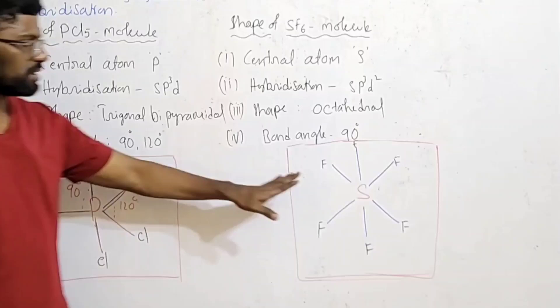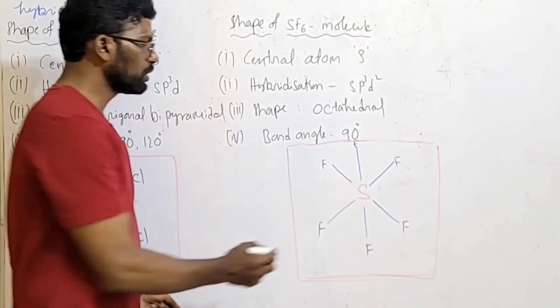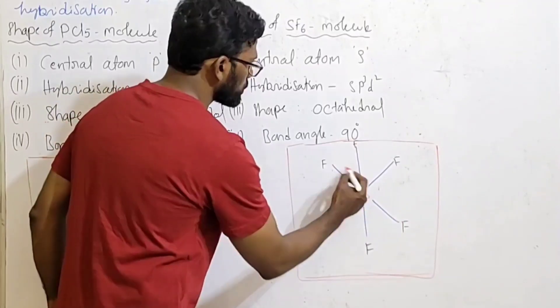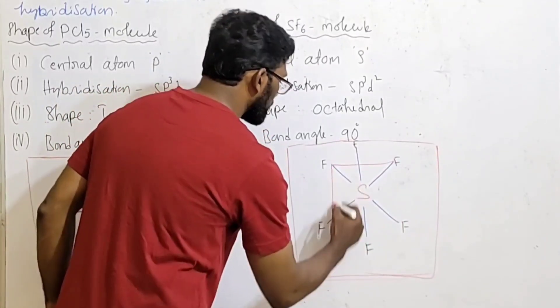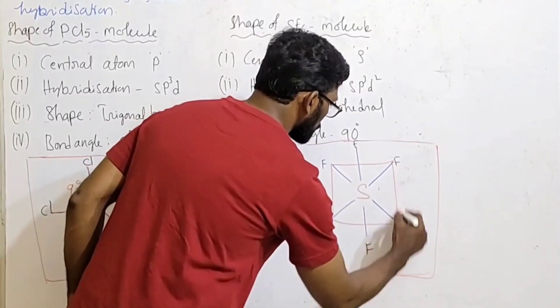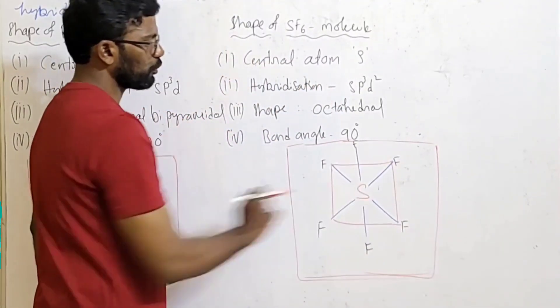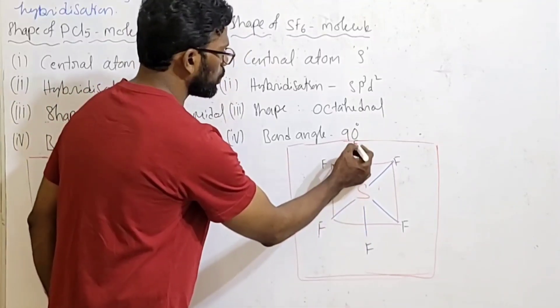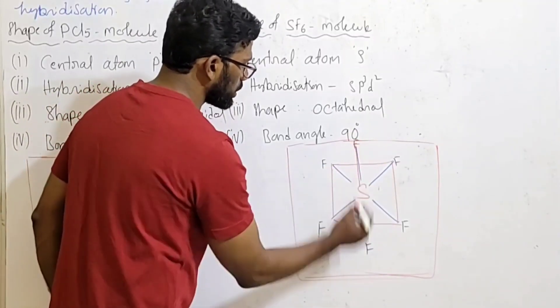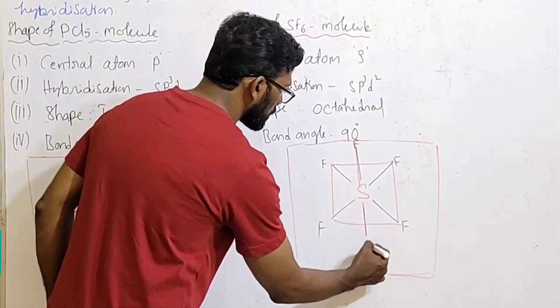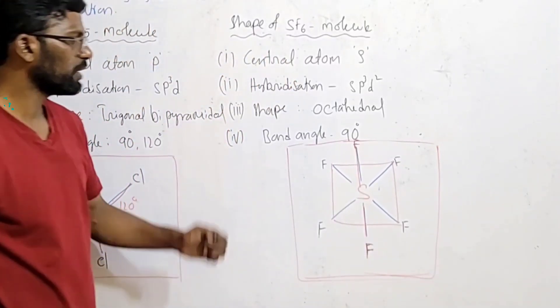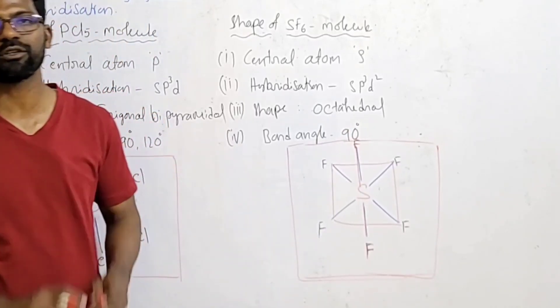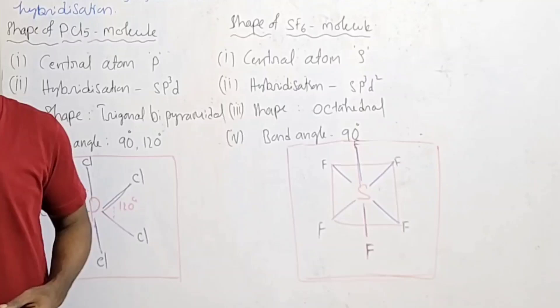This shape is easy to draw. Here is sulfur, and on four sides are four fluorine atoms connected in a square shape. Upside one and downside one - here is one fluorine atom with a bond drawn, and on this side is a bond drawn with fluorine. This is octahedral shape, and all angles are 90 degrees, so the bond angle is 90 degrees.